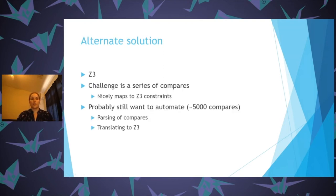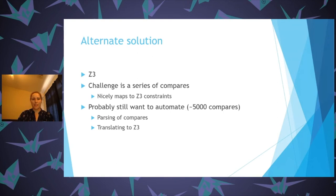An alternative solution — and most write-ups I saw for this challenge — use Z3. The challenge is a series of compares, which maps really nicely to Z3 constraints. However, you'd still want some automation because there were around 5,000 compares, so you'd want to automate parsing them and translating into Z3. But this is one challenge that's possible to do with Z3 without using angr.